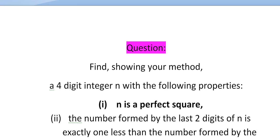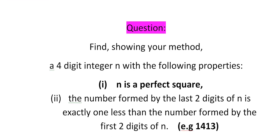Here we're going to look at an interesting number theory problem. We're looking to find a four-digit integer N with the following properties: N is a perfect square like 36, 49, or 100, but four digits long. Also, the number formed by the last two digits of N is exactly one less than the number formed by the first two digits of N. For example, 1413 — but 1413 is not a perfect square, so that's not a valid solution, just an example.